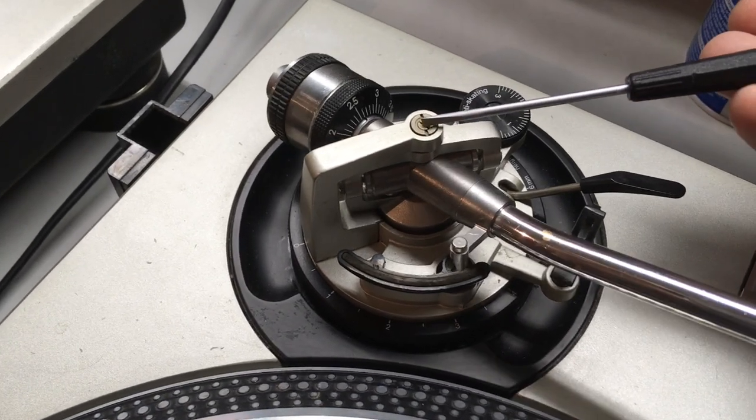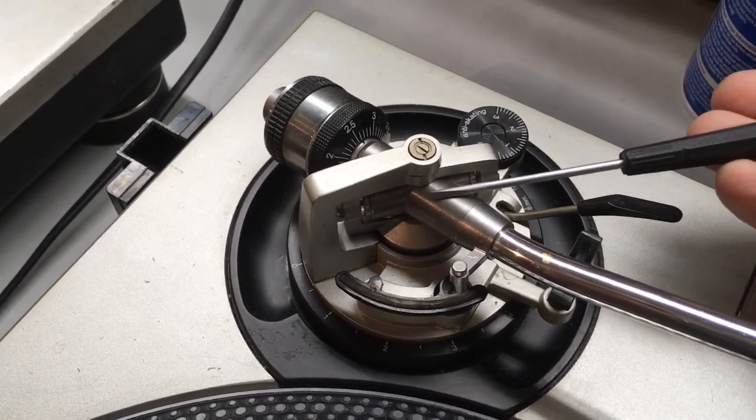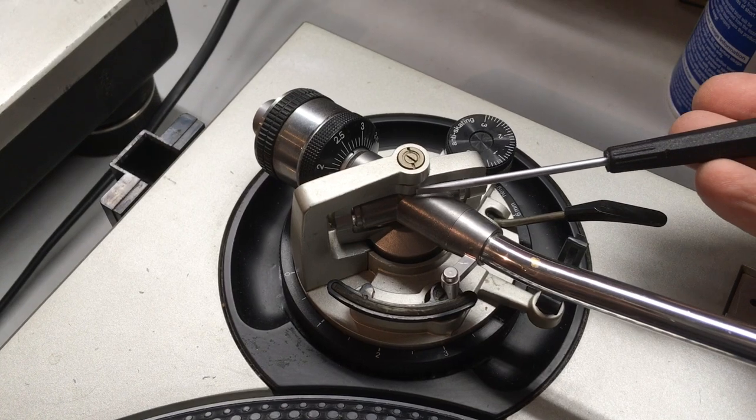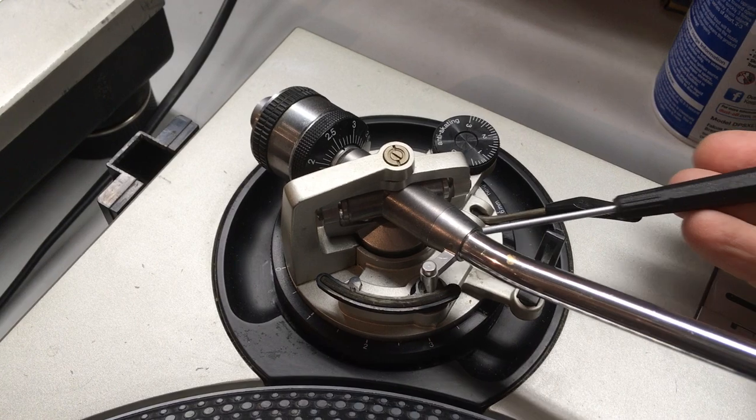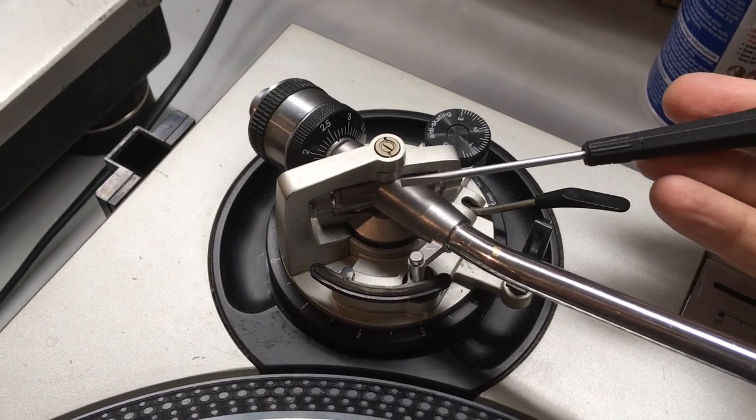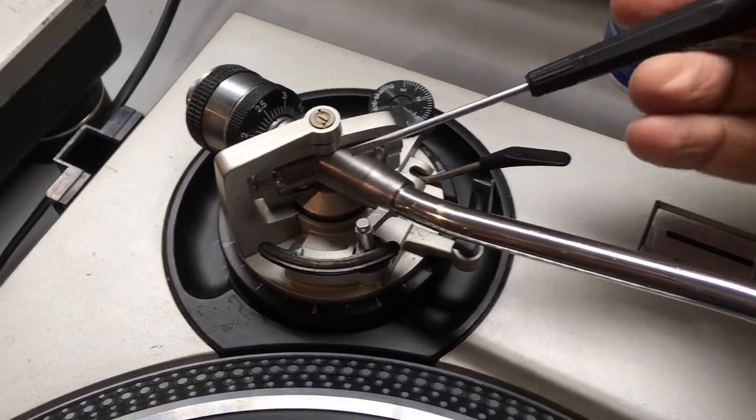Sometimes the tonearm can be fixed by adjusting this pivot, but really there's oftentimes unfortunately not a lot of hope. In the pivots of a 1200's tonearm there are some ball bearings that are very small and very easily damaged.